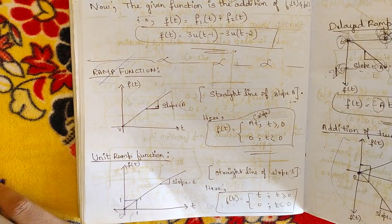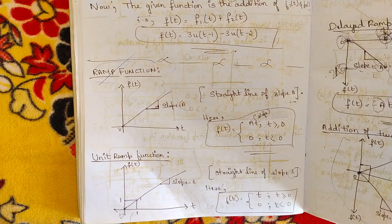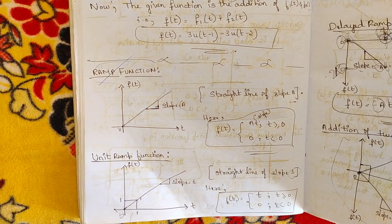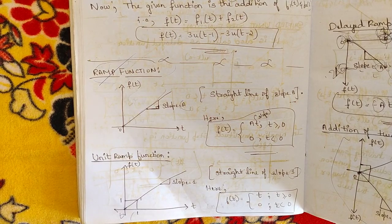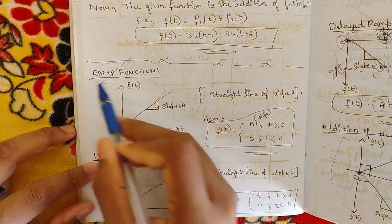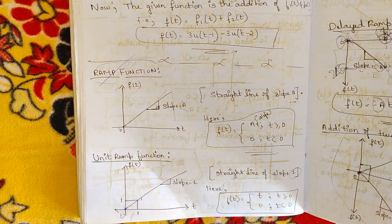Hello everyone, welcome to this new video. In the previous video we discussed the step function — its definition, unit step function, delayed unit step function, and negative step function. We also saw one example problem where we represented a waveform in terms of step functions as an equation. Now, similarly, we are going to see one more concept — the ramp function.